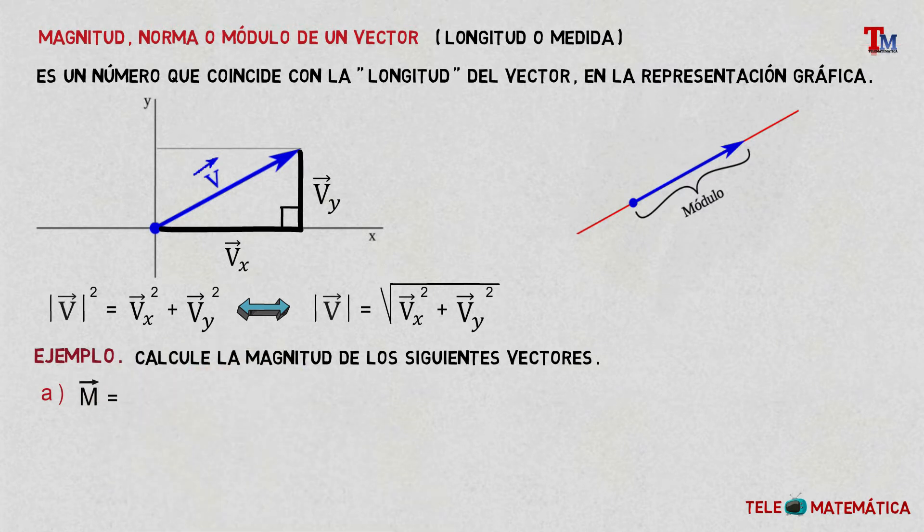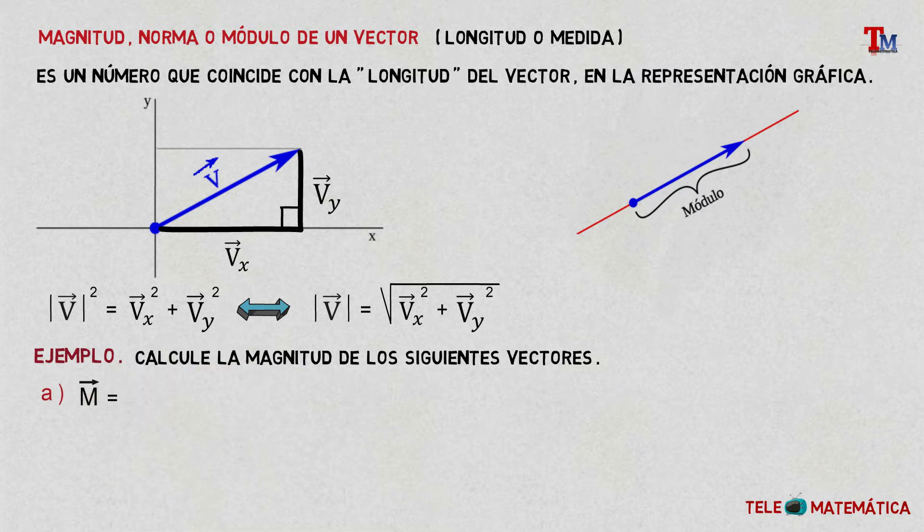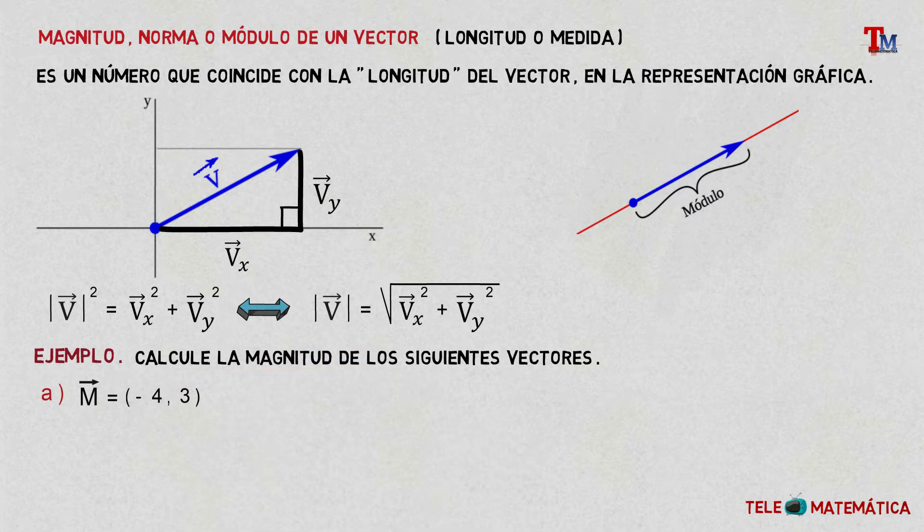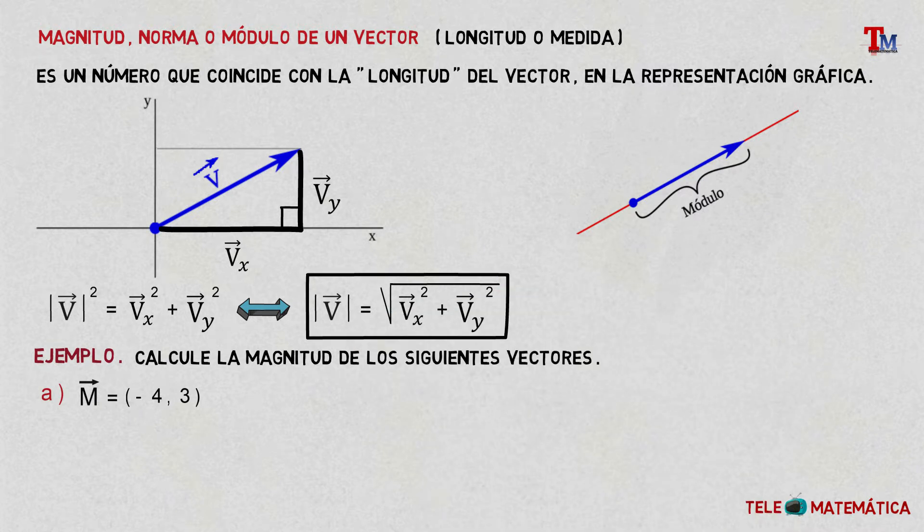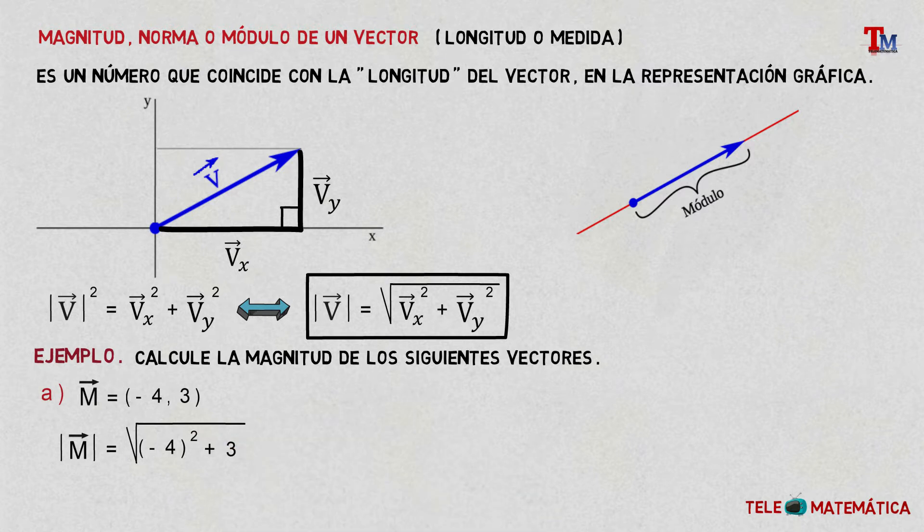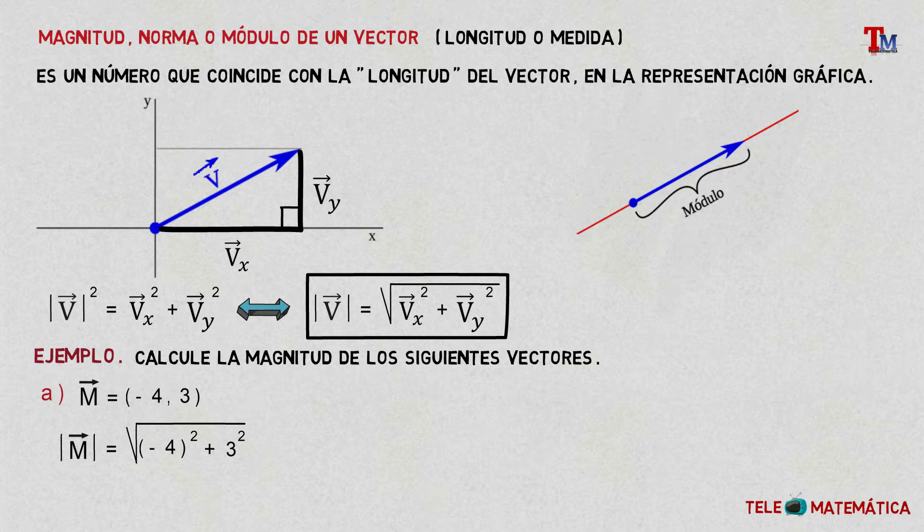Vector M given by the components (-4, 3). Now, using the formula that we have previously seen, we would have that the length of the vector M will be equal to the square root of minus 4 squared plus 3 squared. Now, solving the power and the addition that appears as a radicand, we have that the length of the vector M will be equal to the square root of 25, so the length of the vector will be equal to 5.